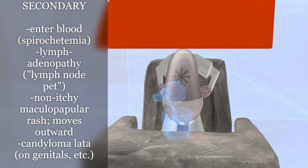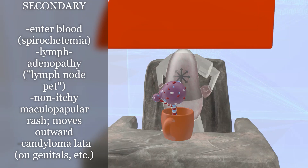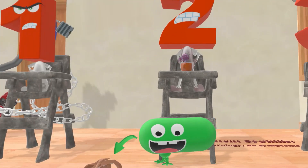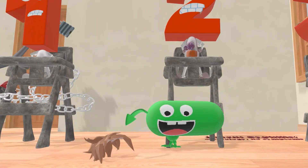In front of the boy is a candy latte — candy latte for condyloma lata — which are smooth, white, painless, wart-like lesions that appear on moist areas like the genitals, and may also appear around the anal region or armpits. We also notice the lymph node is losing its hair, reminding us of the patchy hair loss that may be seen in secondary syphilis.